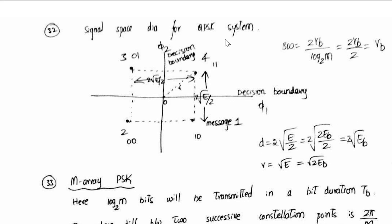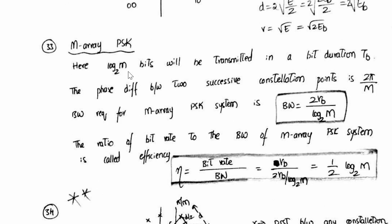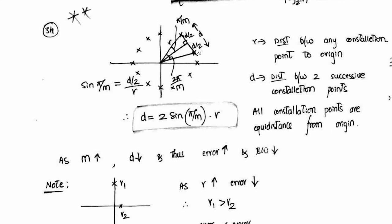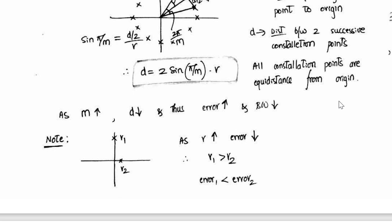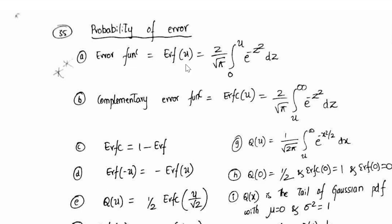So this is the signal space diagram for QPSK. These formulas are important - there was a question related to this constellation diagram in the previous year question paper. So this is the M-ary PSK in general. This was the question related to the constellation diagram which had appeared in the previous year question paper. So the formula is related to probability of error.